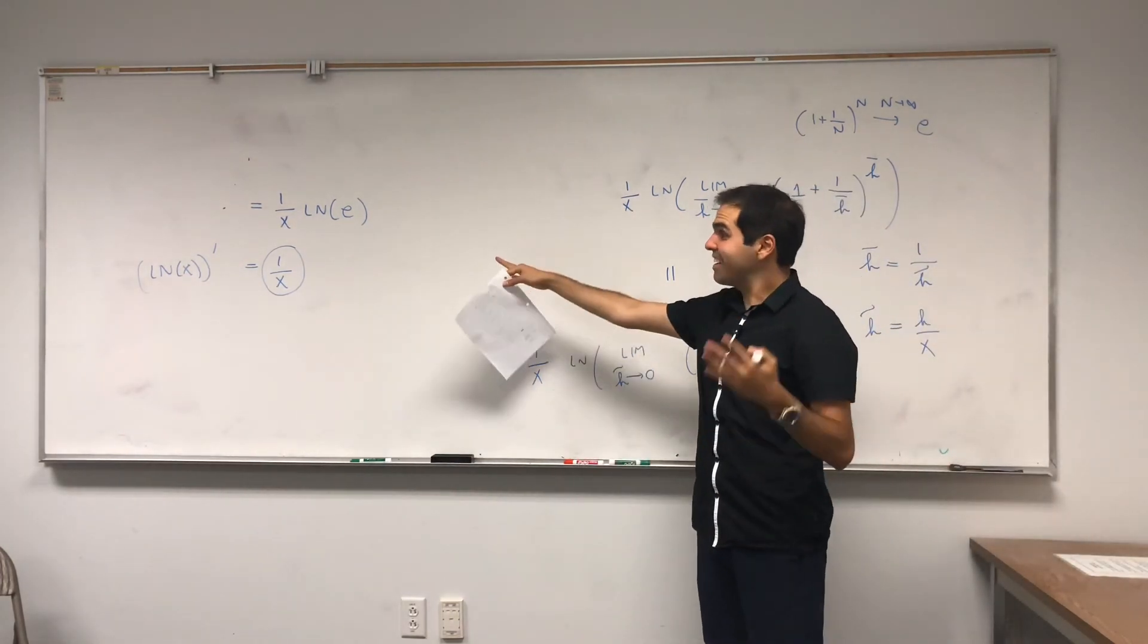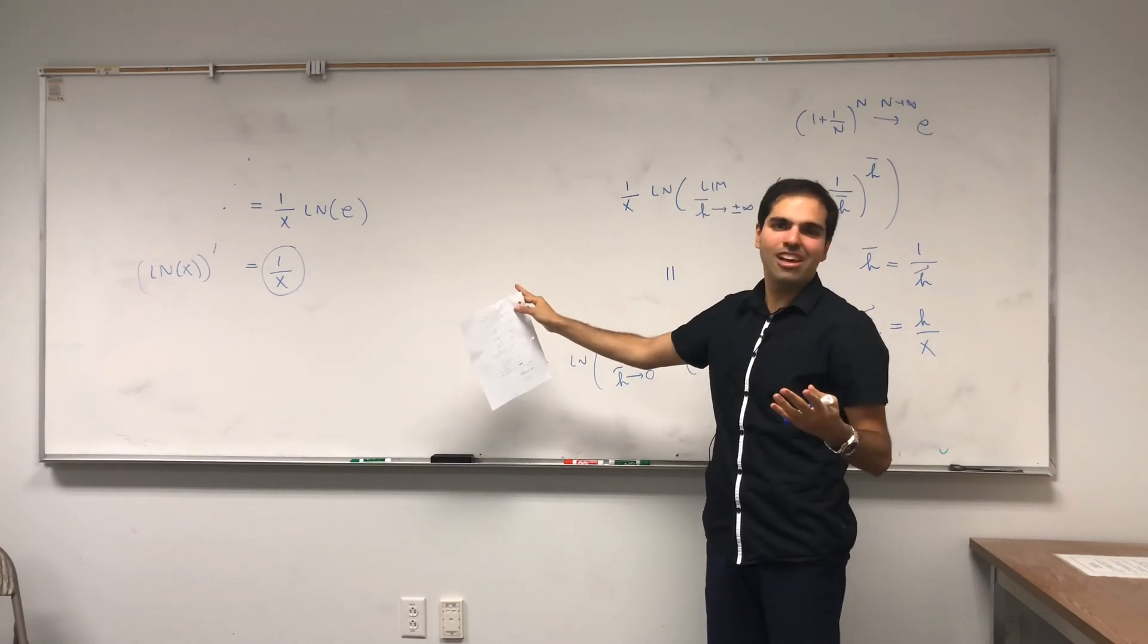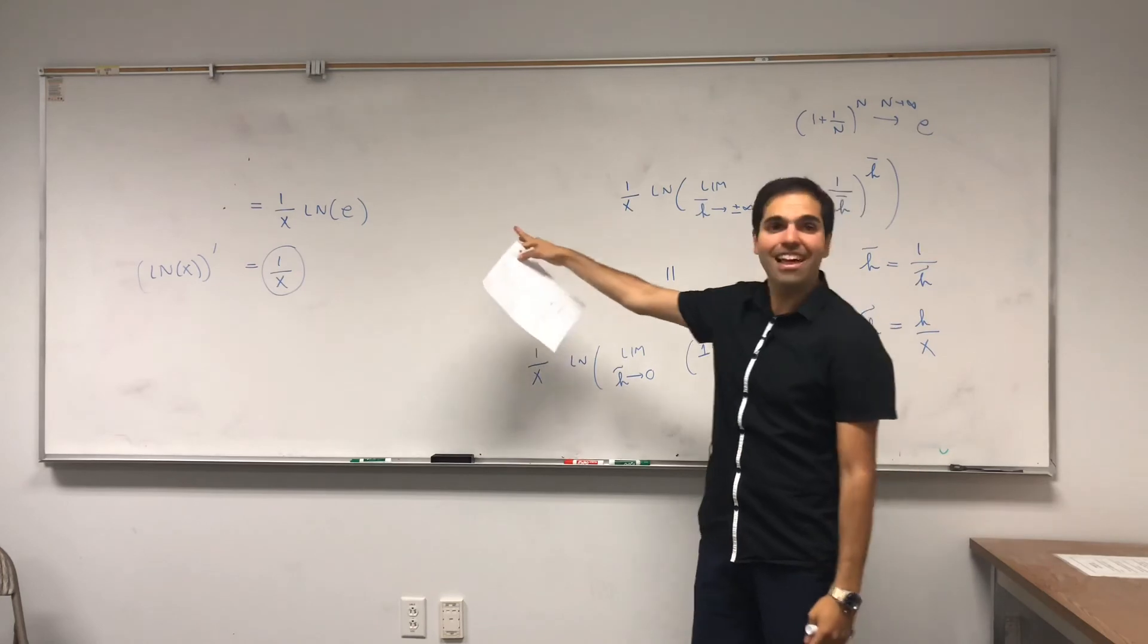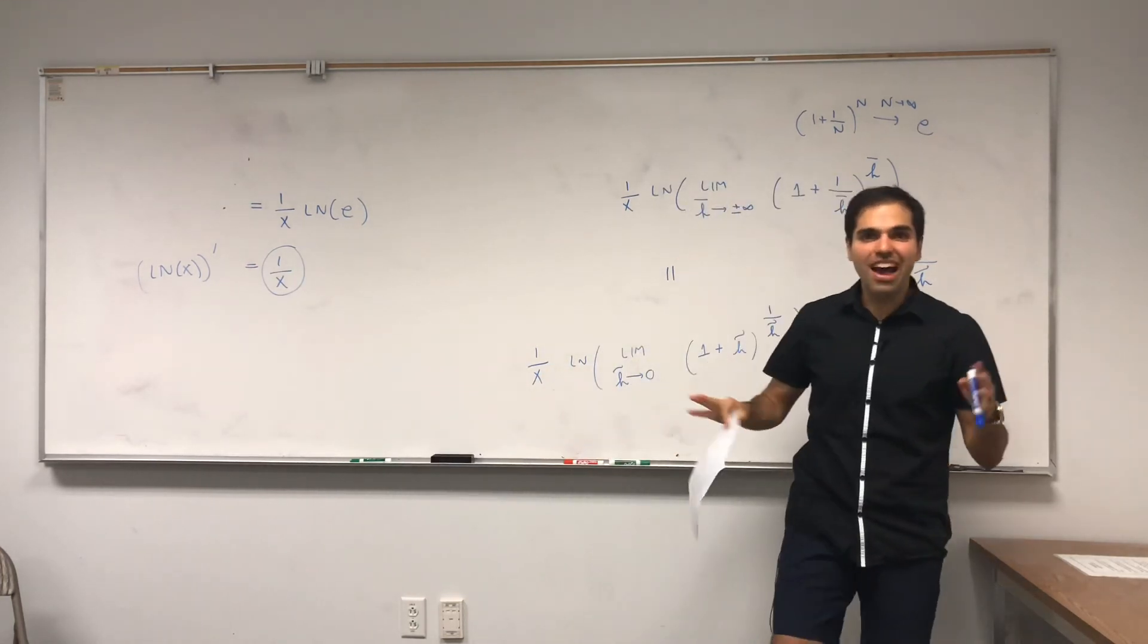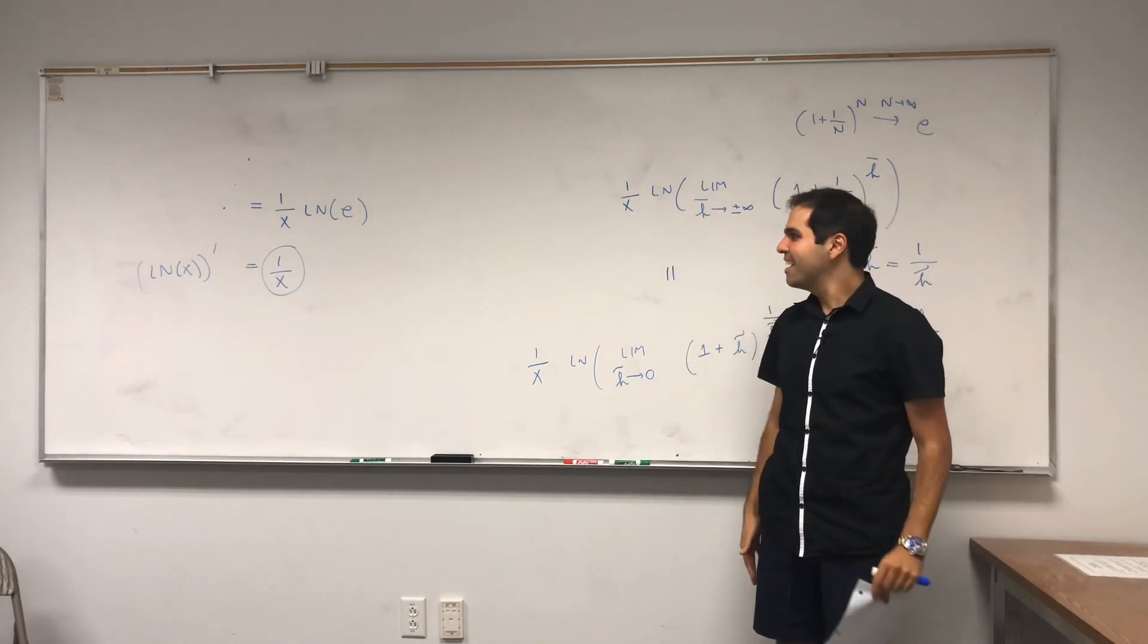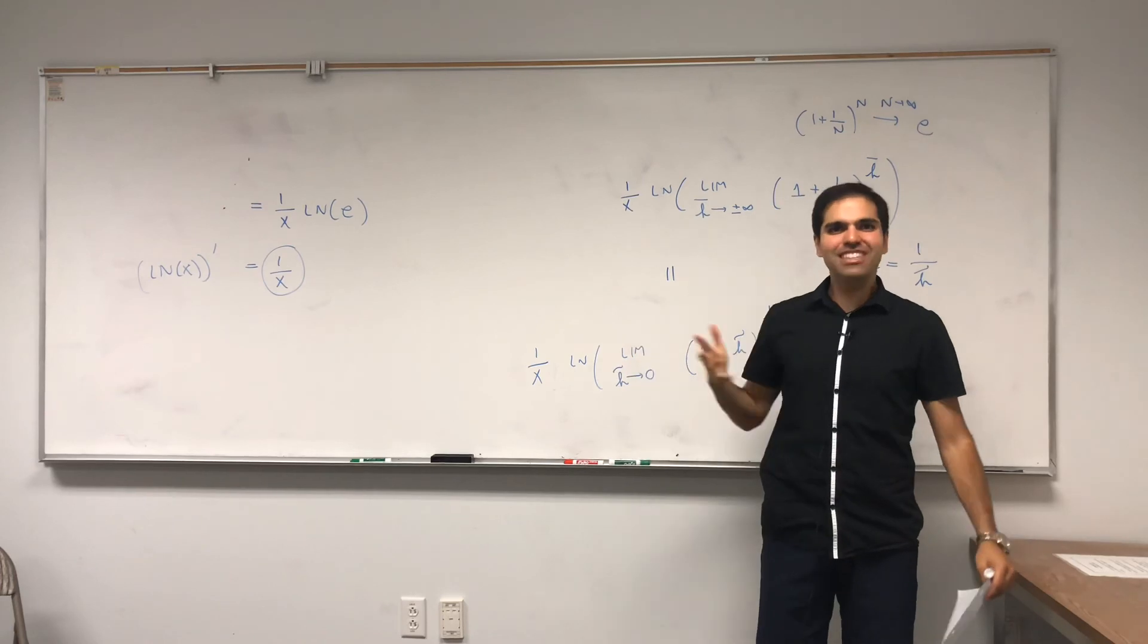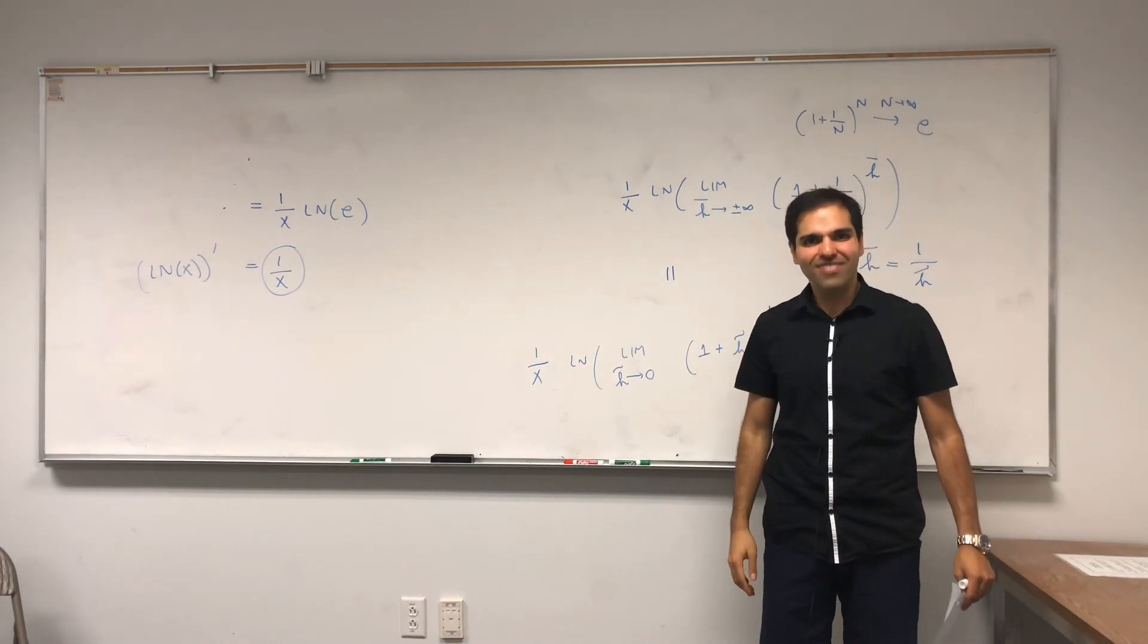All right, so in fact the nice thing is we've shown that the derivative of ln of x is 1 over x, just using the definition of the derivative, which I think is a nice and more direct method of showing that this is true. All right, so if you like that and you want to see more math, please make sure to subscribe to my channel. Thank you very much.